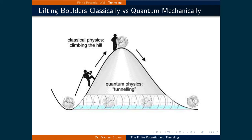We saw in the particle in a finite potential well problem that the particle can be found in the walls of the potential. This fact has profound implications in terms of free particles hitting barriers. Classically, if a particle is to overcome a barrier, it must have sufficient energy to climb over it.